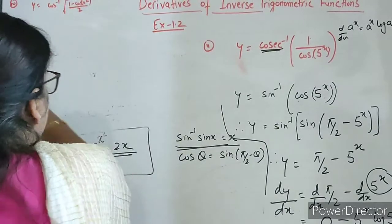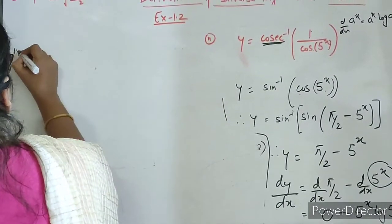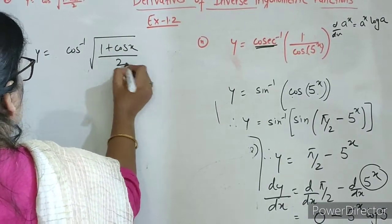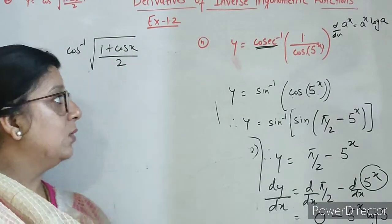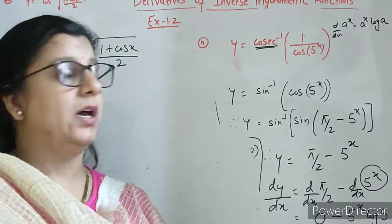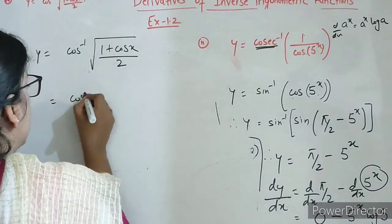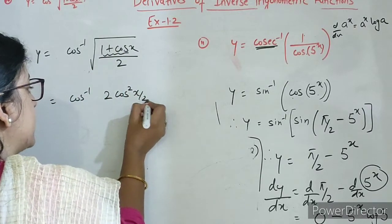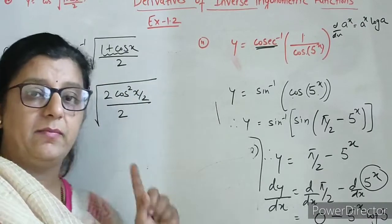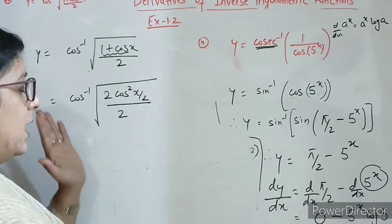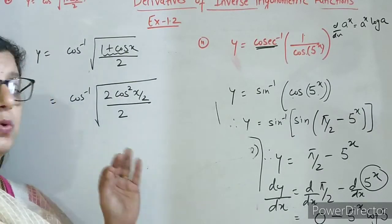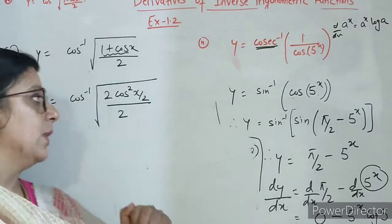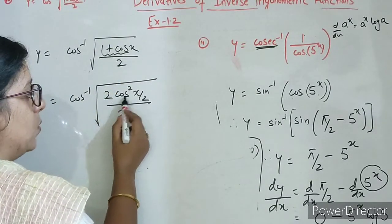Now let's come to third part. y equals to cos inverse of root of 1 plus cos x upon 2. Now see which trigonometric formula we can use here. So 1 plus cos x — the formula of 1 plus cos x is 2 cos square x by 2. All the formulas you will get in my previous video. First by heart all the formulas, then only attempt these questions. So 1 plus cos x ko mein likh diya 2 cos square x by 2.